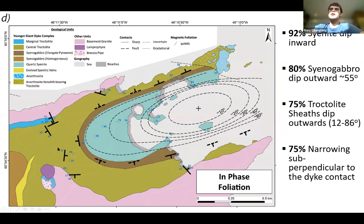At this narrowing here, three quarters are sub-perpendicular to the dike contact. So that's the general pattern in the AMS here.